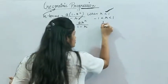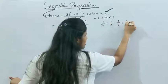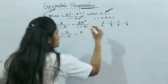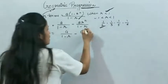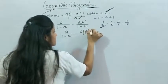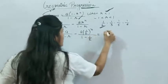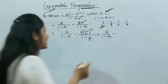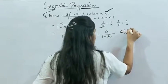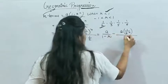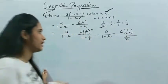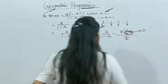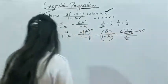If the common ratio is less than 1, you can take any value such as r = 1/2. Then a·r^n/(1-r) becomes (1/2)^n / (1/2). When you take n to infinity, this term tends to 0, so the sum becomes just a/(1 - r).